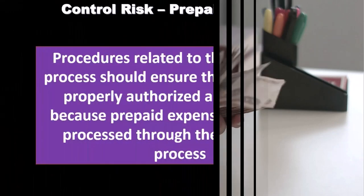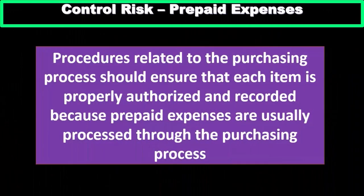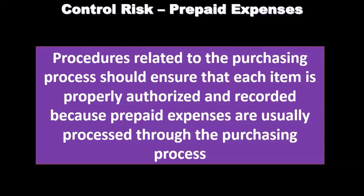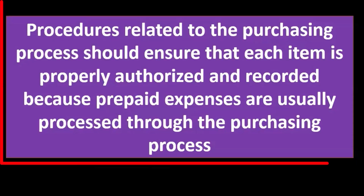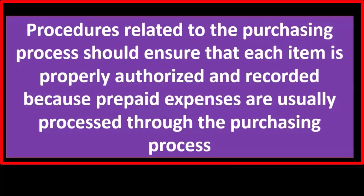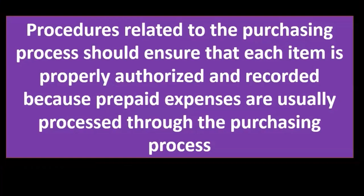Now we consider the control risk — the controls that the organization has put in place. Once we consider control risk and inherent risk, we can set detection risk to determine the level of testing we want to do. Procedures related to the purchasing process should ensure that each item is properly authorized and recorded, because prepaid insurance is usually processed through the purchasing process.